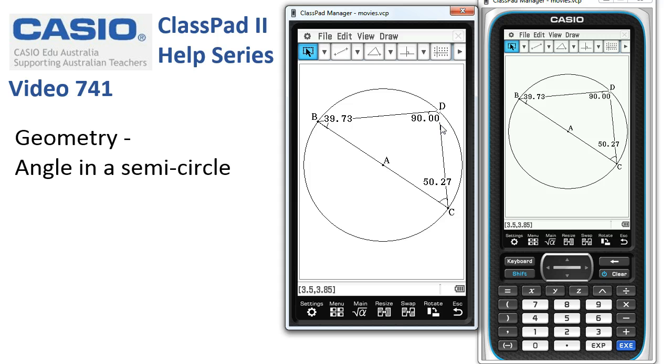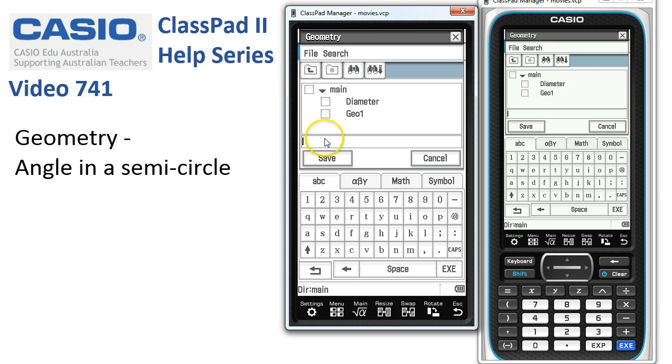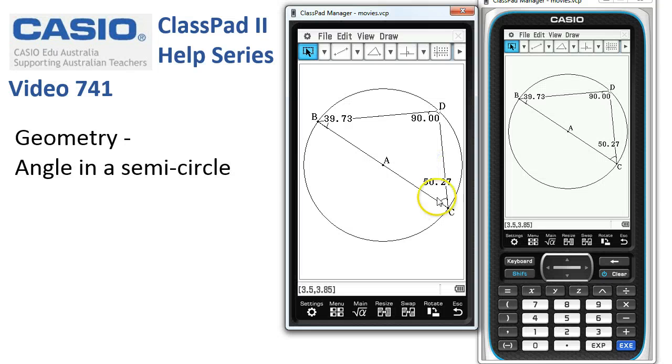We'll look at a couple of ways of animating this in videos 781 and 782, but they do involve slightly more advanced skills, but not that much. So you might want to take a look at that. We can also save this if you wanted to. Remember there's File, Save, and we could save a copy of this angle in a semi-circle demonstration. I won't bother today.